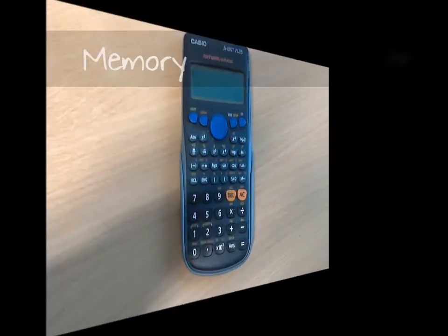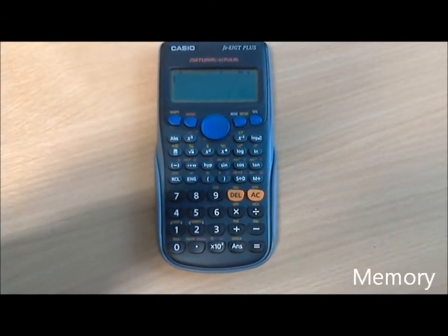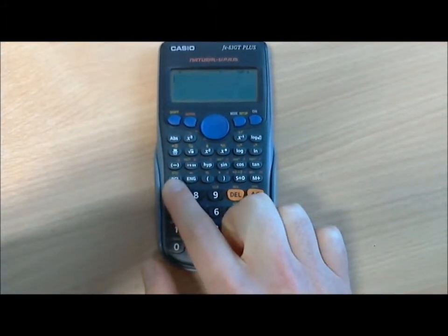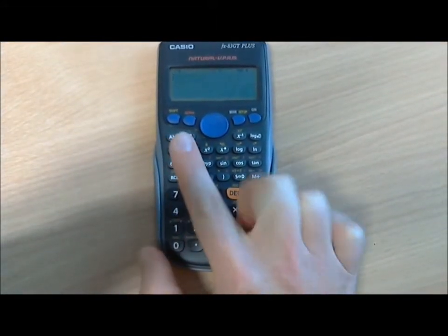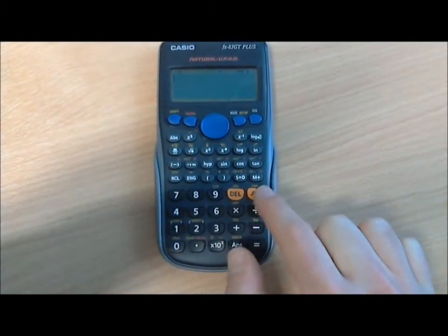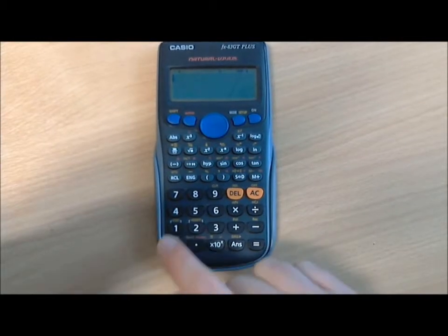To use the memory on your calculator, there are three important buttons: the RCL button for recall, just above that which you get by hitting shift and recall is the STO or store button, and the memory plus button.